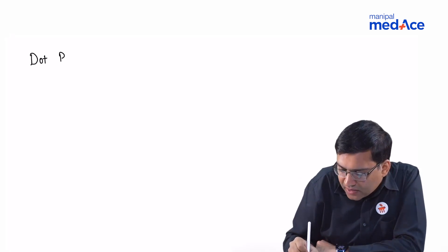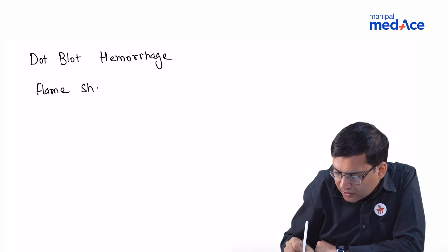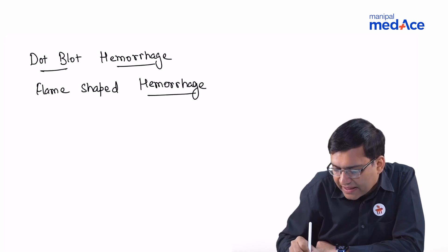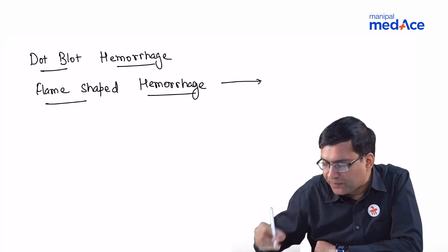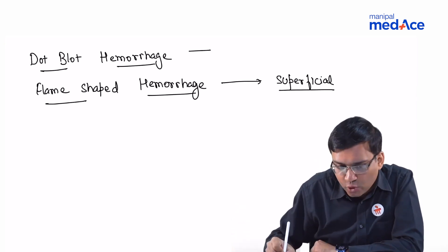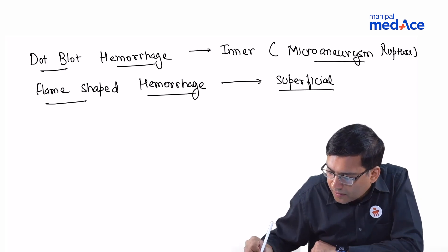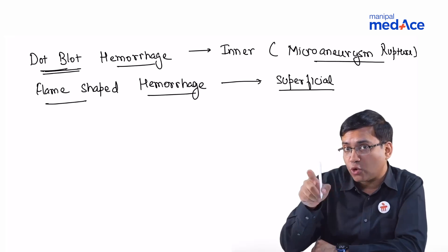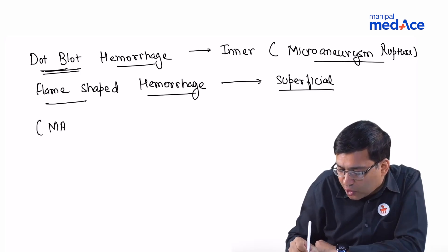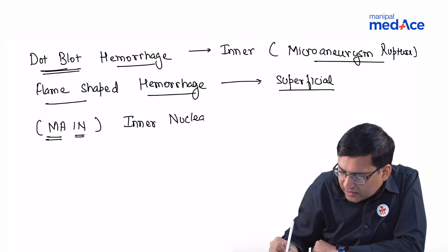The second important ocular manifestation is dot blot hemorrhage and flame-shaped hemorrhage. Hemorrhage means bleeding — the vessel wall has burst. If the hemorrhages are superficial, in the retinal nerve fiber layer or ganglion cell layer, we call them flame-shaped hemorrhages. If they are deeper — due to rupture of the microaneurysm — they are called dot blot hemorrhages. The retinal capillaries are located in the inner nuclear layer, which is worth remembering as a mnemonic. The location of microaneurysms in the inner nuclear layer was a previous year exam question.